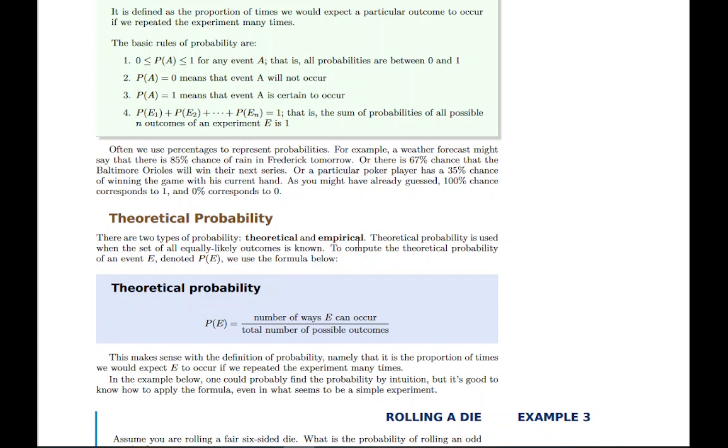Empirical probability is when we actually have done an experiment and we have some data. For instance, the example I always use is in sports. In baseball, you have a batting average, and each player has their batting average, which is basically a measure of the likelihood they'll get a hit each time they come to the plate, based on how often they've gotten hits in the past.